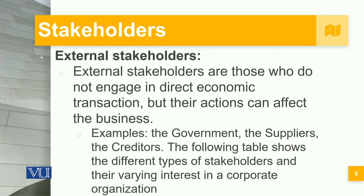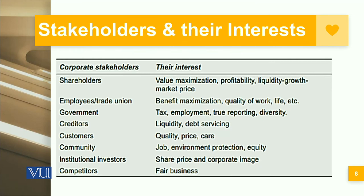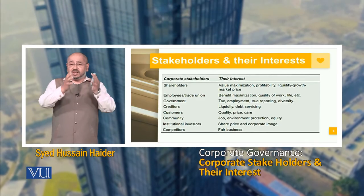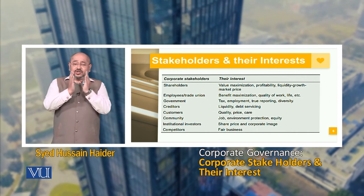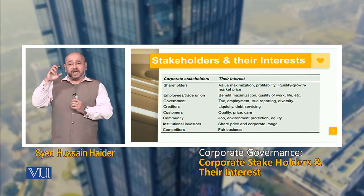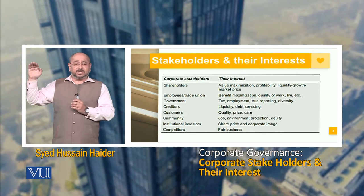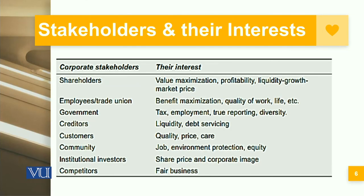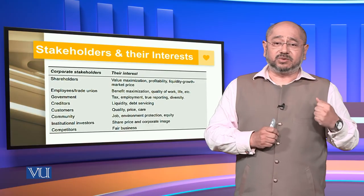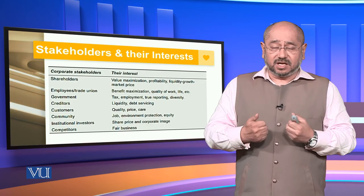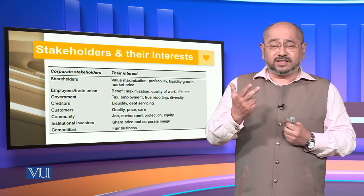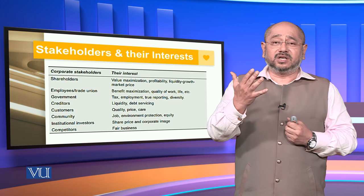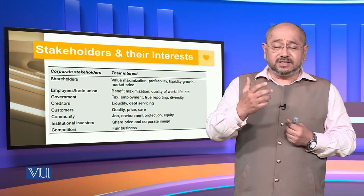Looking at a table of corporate stakeholders and their interests: shareholders are interested in value maximization, profitability, liquidity, growth, and market price. Employees and trade unions want benefit maximization and quality of work and life. The government is more interested in taxes, employment, true reporting, and diversity. Creditors want liquidity and debt servicing. Customers are interested in quality, price, care, post-sale services, and maintenance.